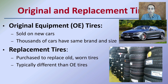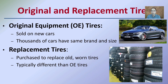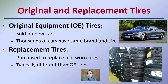When looking at tires, we also consider original and replacement tires, which is relevant when trying to match a car to a crime scene. Original equipment (OE) tires are sold on new cars, and thousands of cars have the same brand and size. Replacement tires are purchased to replace old worn tires and are typically different from original equipment tires — there are a wide variety to select from.